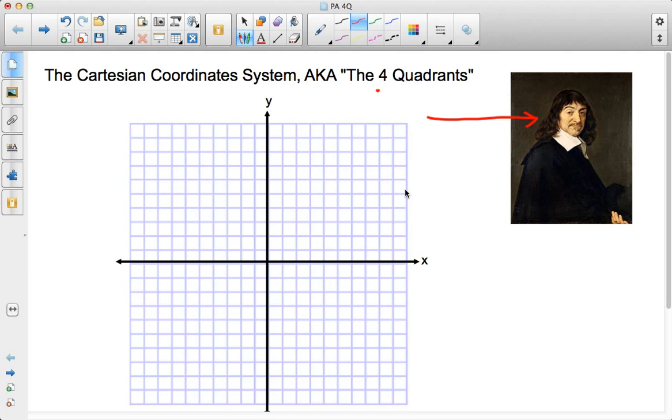You really wish that it was a more mathier story than that, but no, it's really not. It's kind of boring that way. But anyway, so he decided to come up with a four quadrant system.